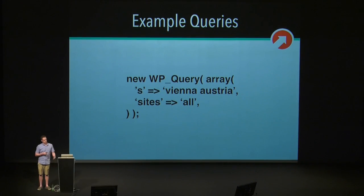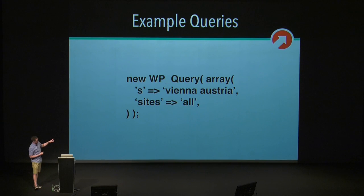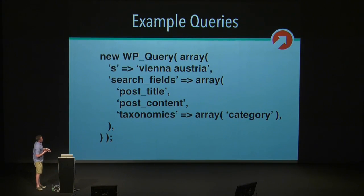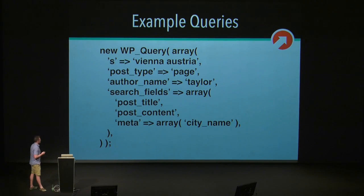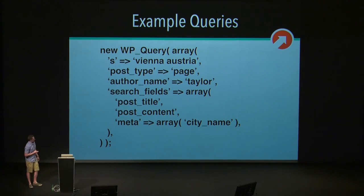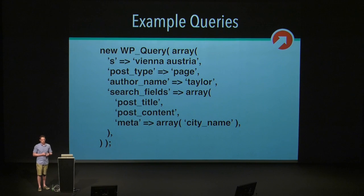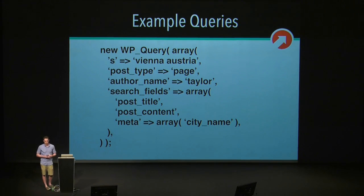ElasticPress integrates with WP_Query and accepts pretty much all the same parameters, but it has a couple of special ones. The sites parameter, if we pass it to WP_Query, is actually going to query all the blogs in our network. Another special parameter is search_fields — this lets us choose which fields should be searched. In this case, it's going to search post title, post content, and the category taxonomy. In another example, we're filtering by author, filtering by post type, and specifying search fields of post title, post content, and the meta key city name — so it actually searches that meta key for us. All this stuff is very performant and results return pretty much instantly.